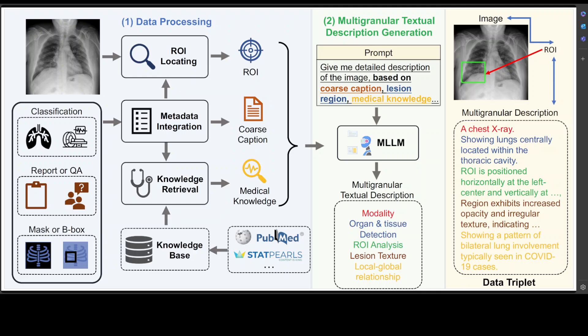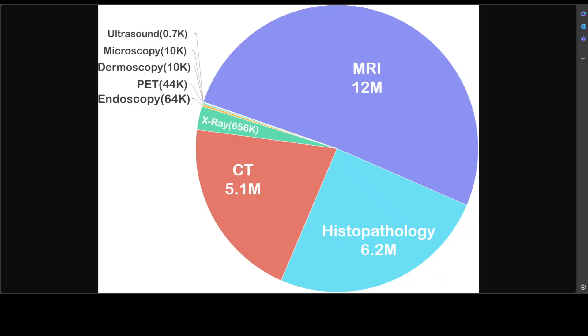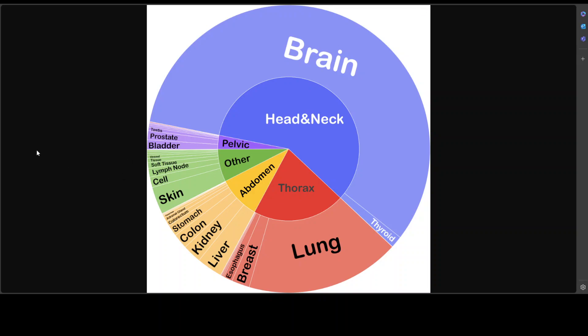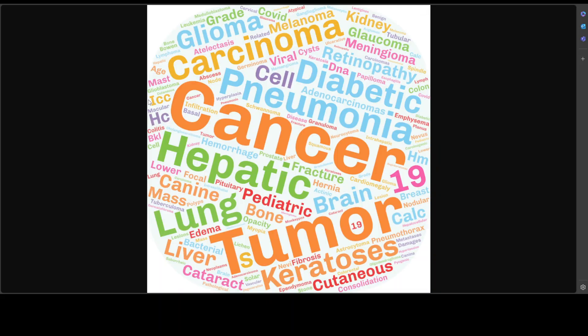They have also assembled a large amount of medical data from over 90 online resources such as Kaggle, PhysioNet, Synapse, and many more. Looking at the pipeline: first there is data processing, where they extract essential information from collected data including metadata integration to generate coarse captions, ROI locating, and medical knowledge collection. Second, there is multi-granular textual description generation, where using the previous information they prompt MLMs to generate fine-grained captions. You can also see the modality distribution for MedTrinity-25M — showing how much is MRI, endoscopy, dermoscopy, and other modalities — as well as the anatomical and biological structures covered.